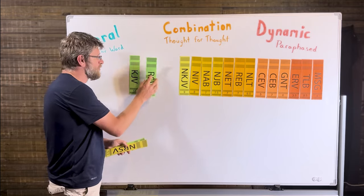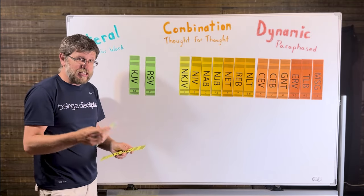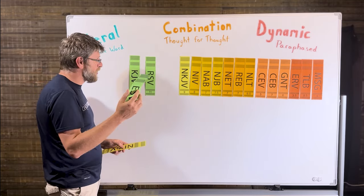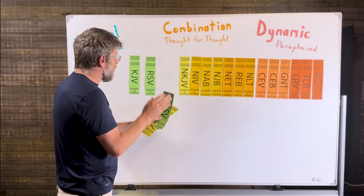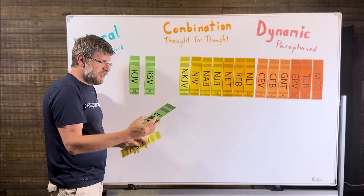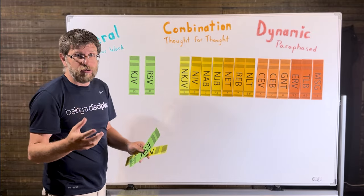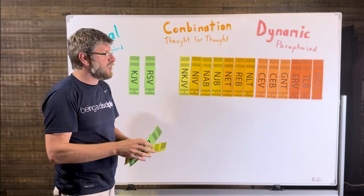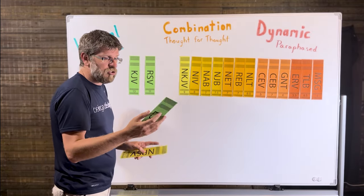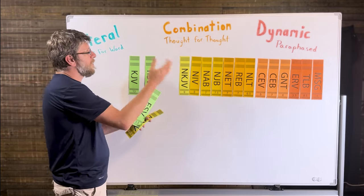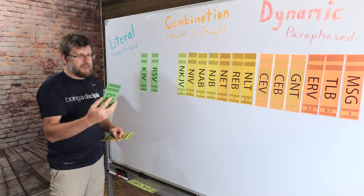And this leads to the English Standard Version in 2001. This one's derived out of the Revised Standard Version, but they are trying to keep the theological framework that we're so used to, the words like justification, salvation, sanctification, all of those words in it, but use modern English to better understand it.